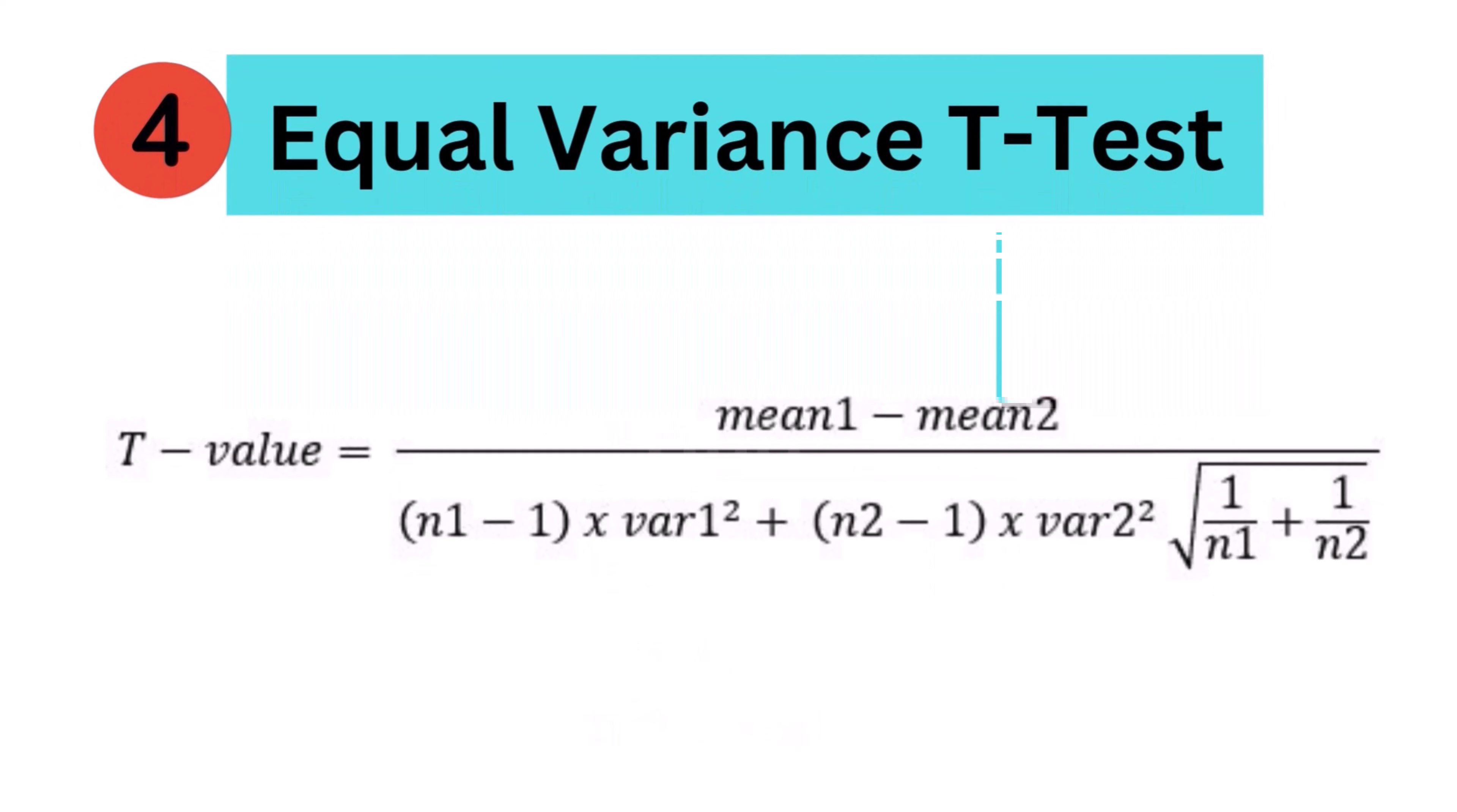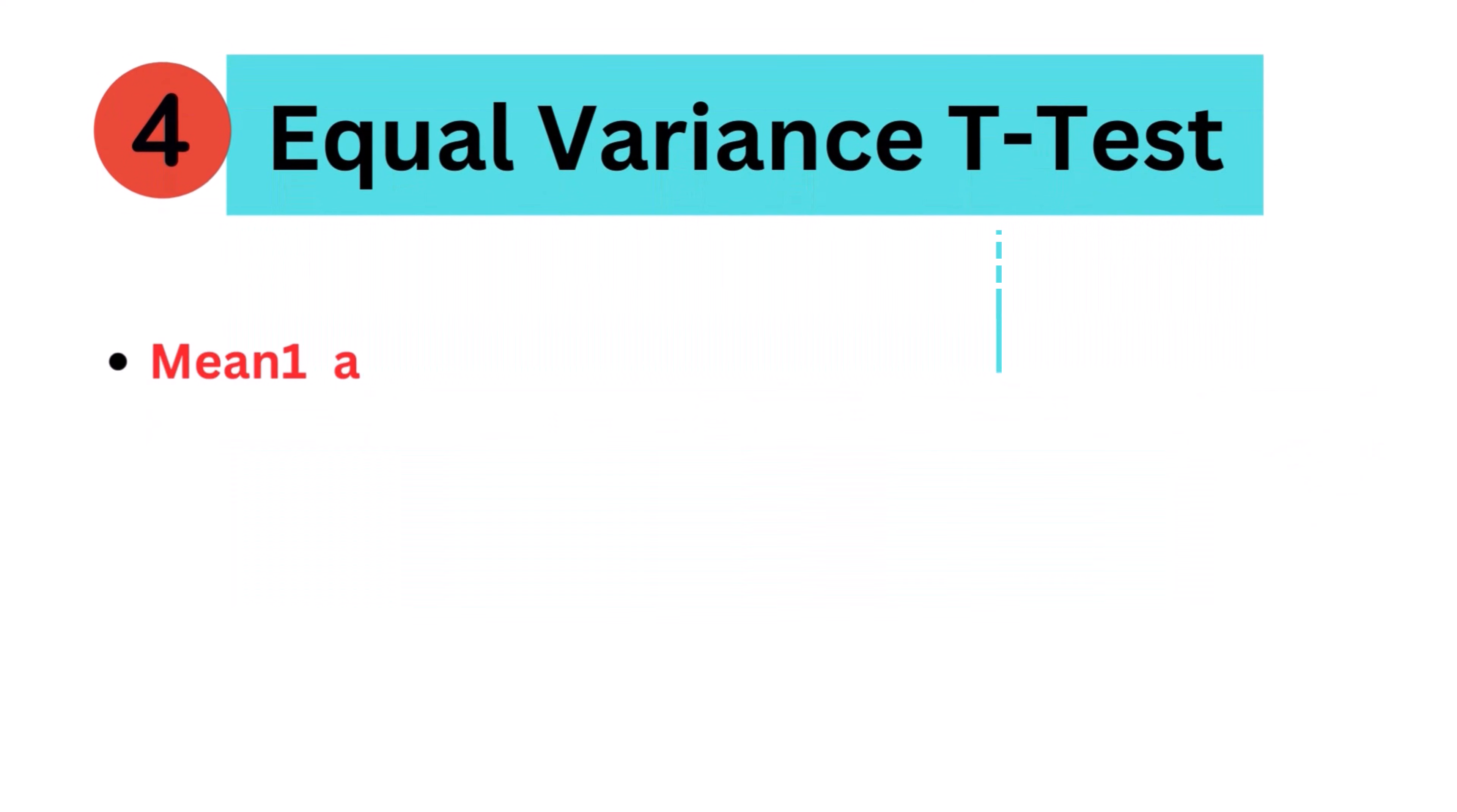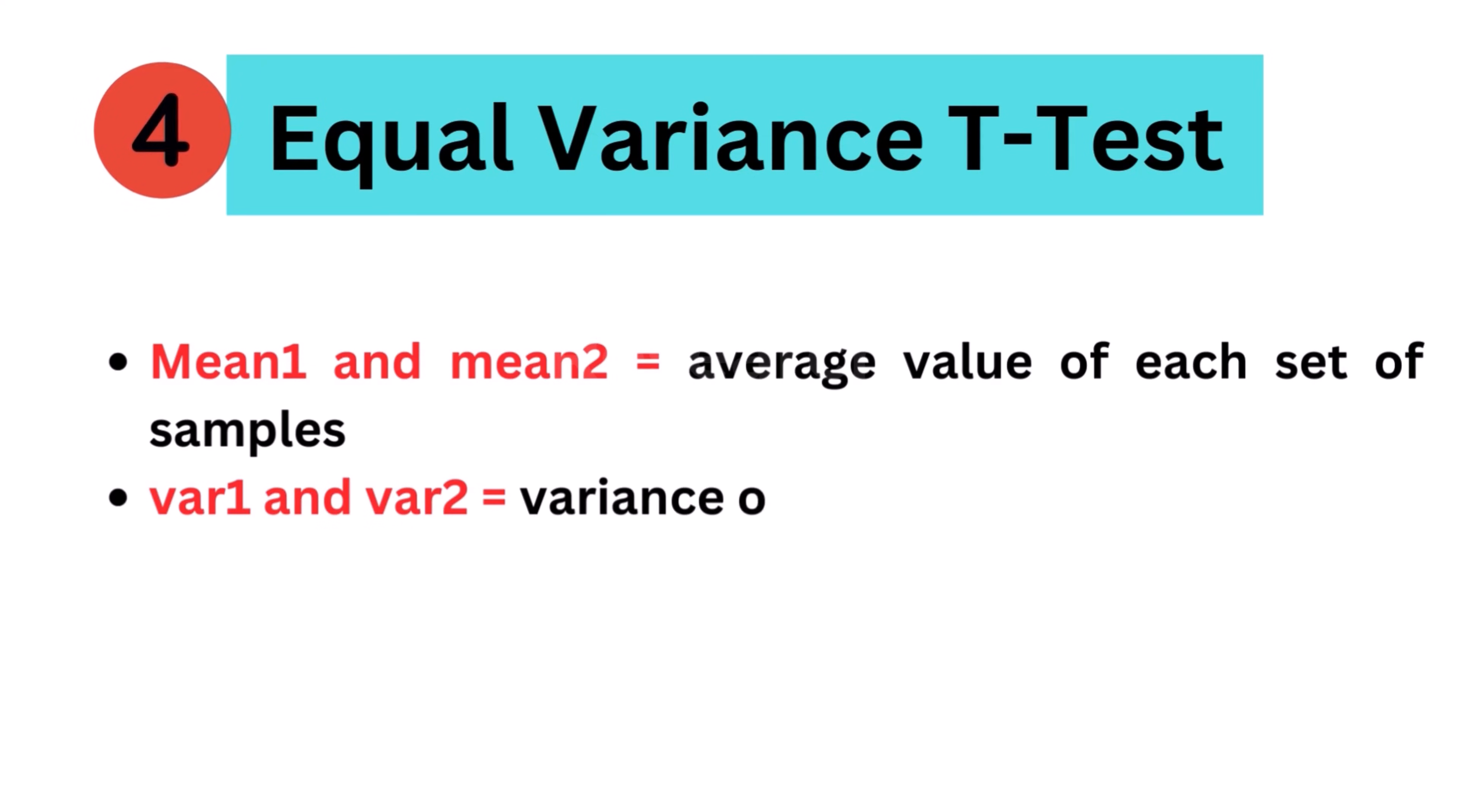Equal variance. For equal variance t-test, this test is conducted when the sample size in each group or population is the same or the variance of the two data sets is similar. It is also referred to as pooled t-test. The formula applied: mean 1 and mean 2 equal average value of each set of samples, variable 1 and variable 2 equal variance of each set of samples, N1 and N2 equal number of records in each set.